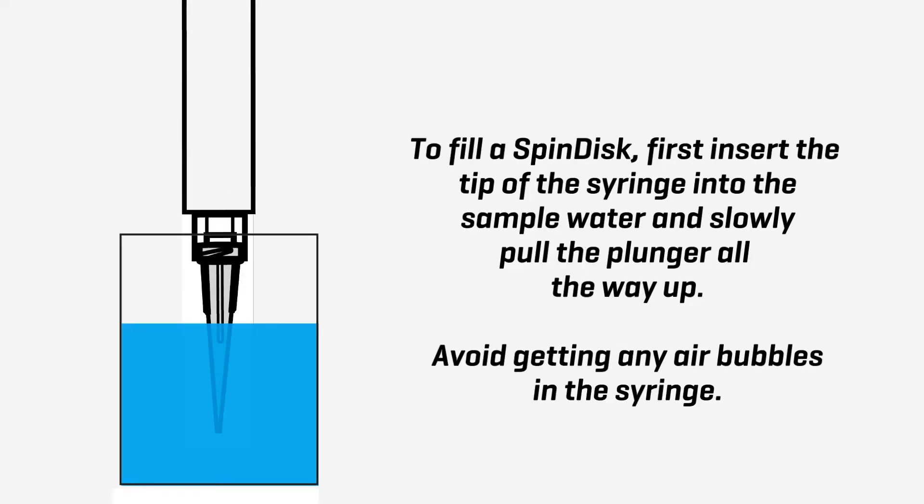To fill a spin disc, first insert the tip of the syringe into the sample water and slowly pull the plunger all the way up. Avoid getting any air bubbles in the syringe.